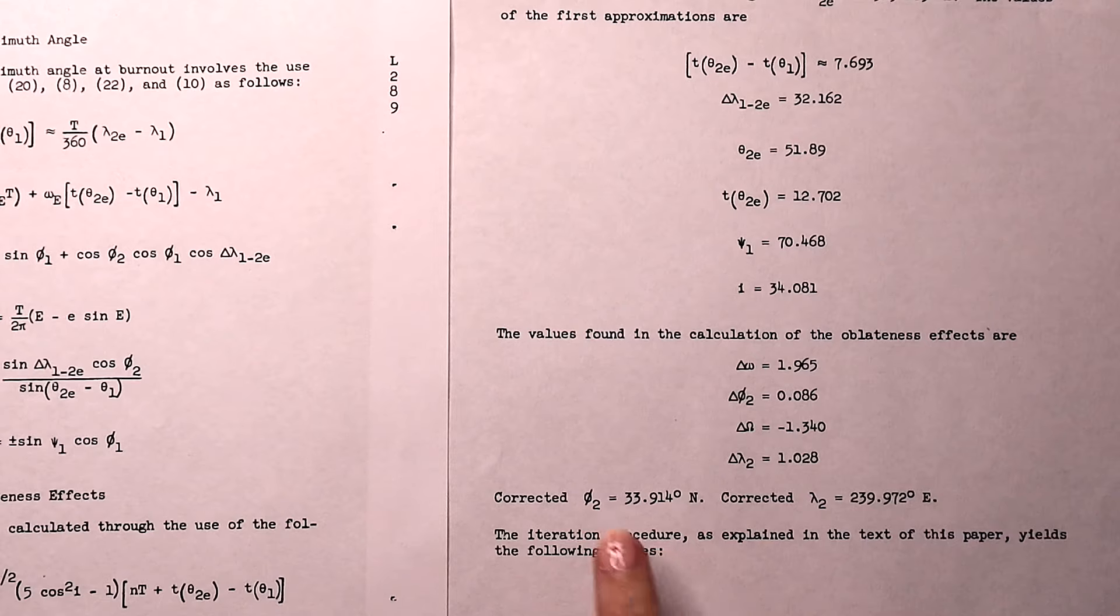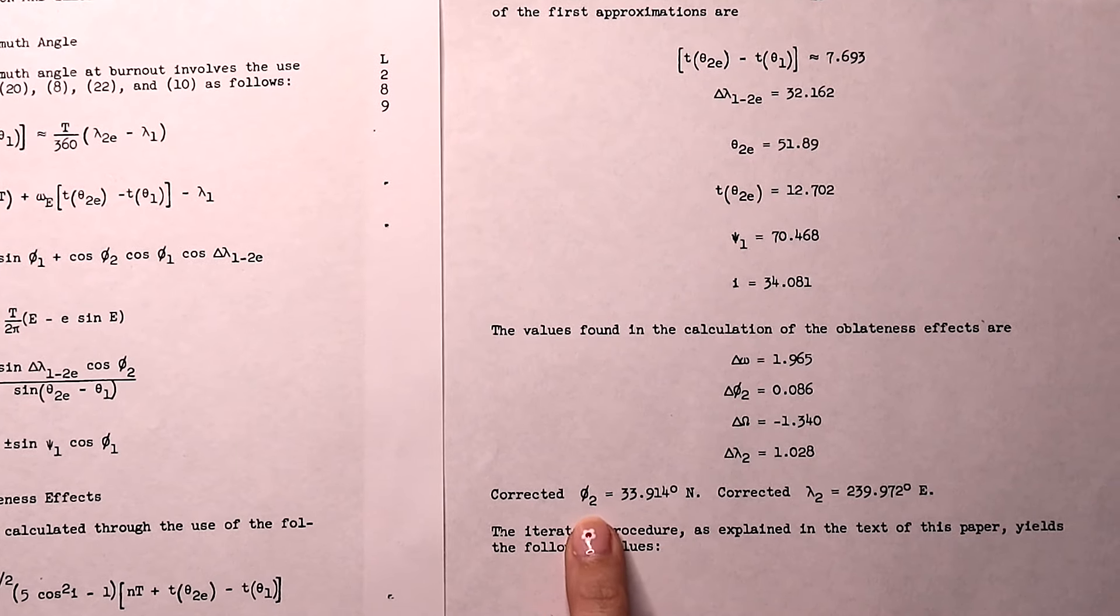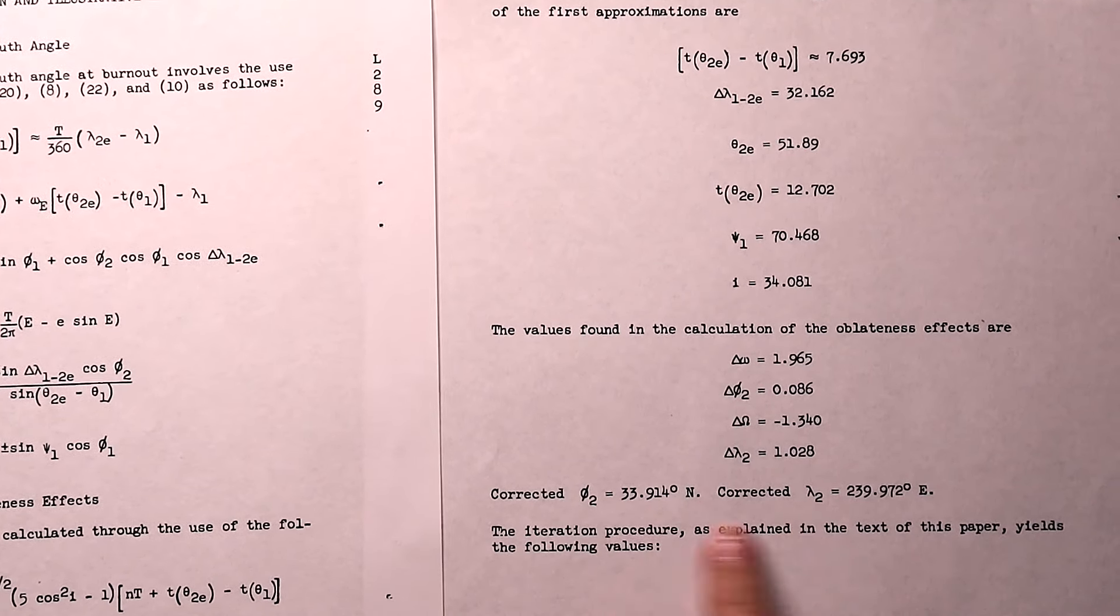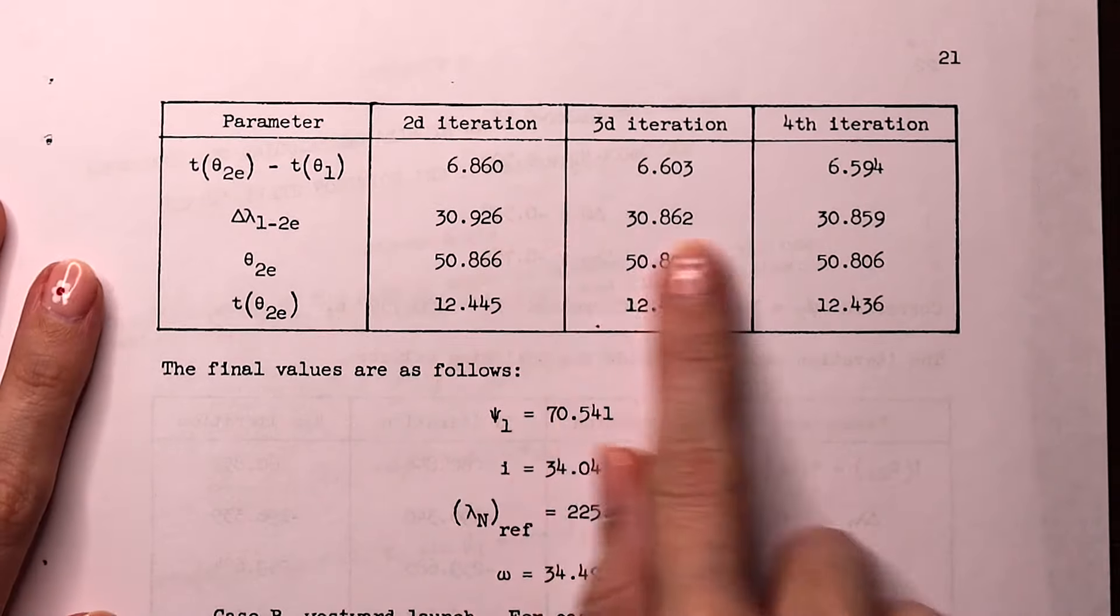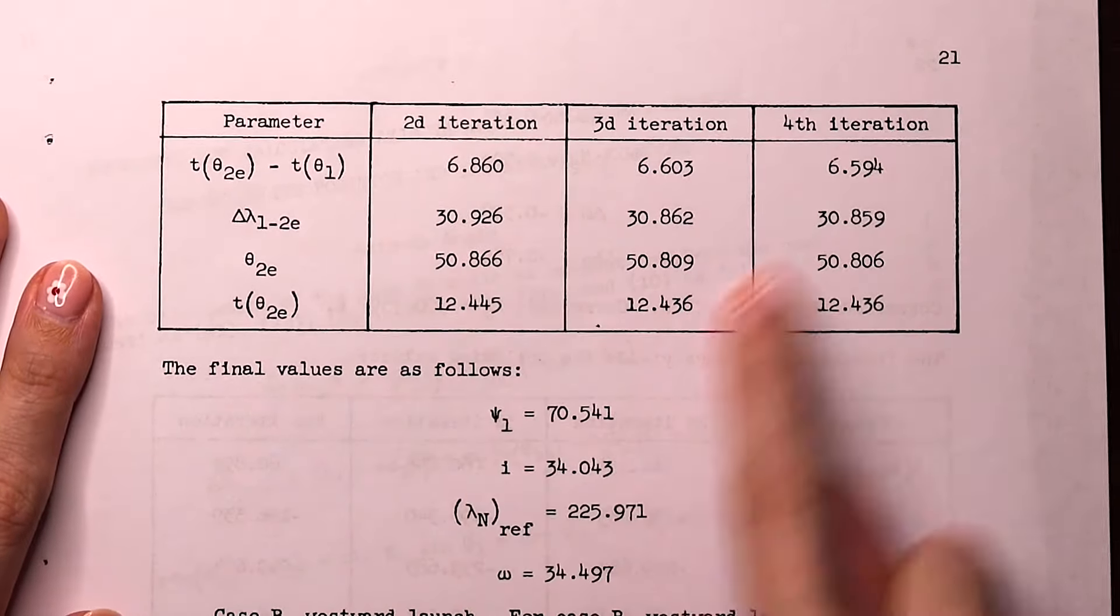But also for that, use new values for your latitude and your longitude that are corrected for the oblateness of the earth.